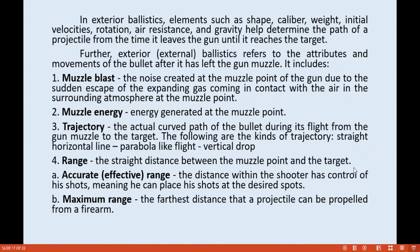In exterior ballistics, elements such as shape, caliber, weight, initial velocities, rotation, air resistance, and gravity help determine the path of the projectile from the time it leaves the gun until it reaches the target. Exterior ballistics refers to the attributes and movements of a bullet after it has left the gun muzzle.